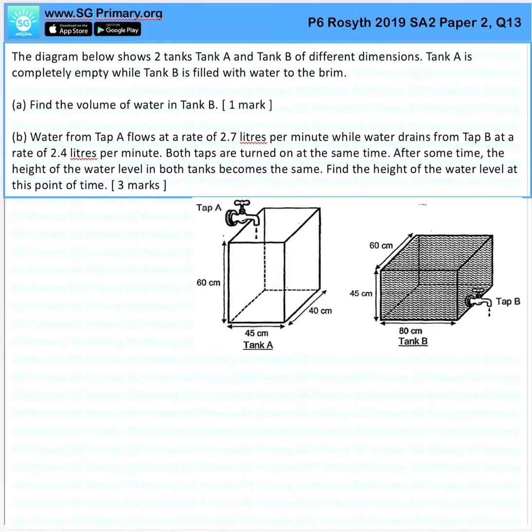Find the volume of water in tank B. Volume is length times breadth times height, so volume of water in tank B is 80 times 45 times 60, which gives us 216,000 cm cubed.